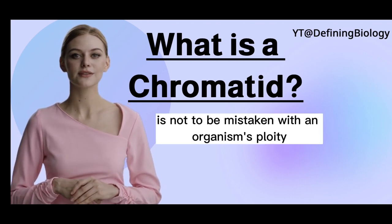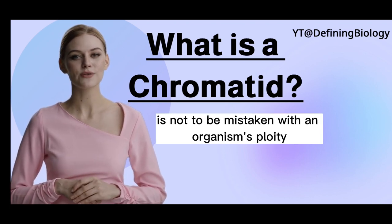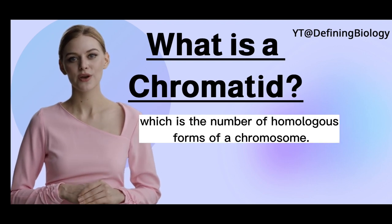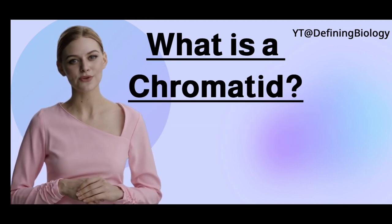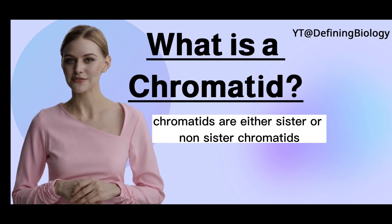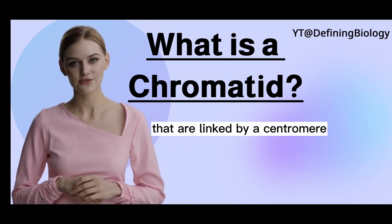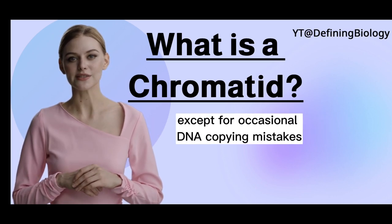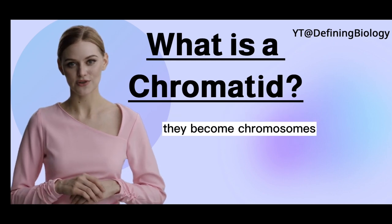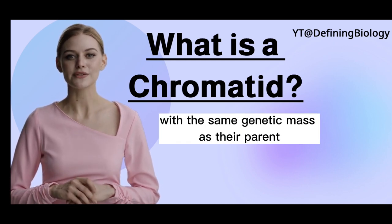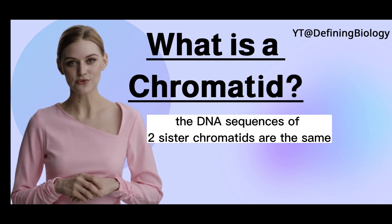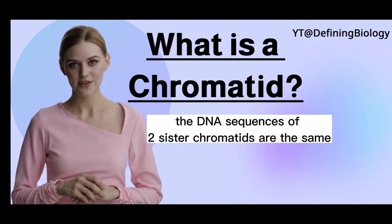The pairing of chromatids is not to be mistaken with an organism's ploidy, which is the number of homologous forms of a chromosome. Chromatids are either sister or non-sister chromatids that are linked by a centromere. Except for occasional DNA copying mistakes, they become chromosomes with the same genetic mass as their parent. The DNA sequences of two sister chromatids are the same.